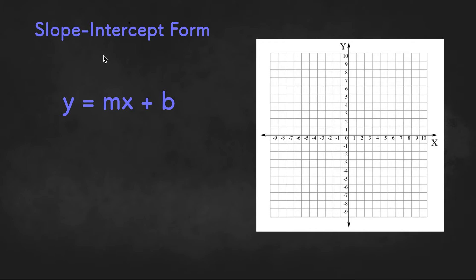So slope-intercept form is y equals mx plus b. The m here stands for the slope of the line, and the b stands for the y-intercept of the line.